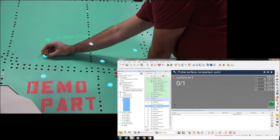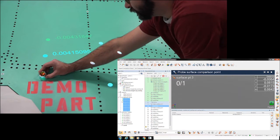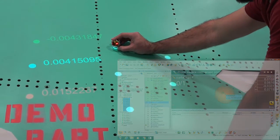A ProjectionWorks 3D optical projection system illuminates the surface comparison points that need to be measured with the laser tracker. As each point is measured, the projection is updated to display the deviation from engineering nominal.